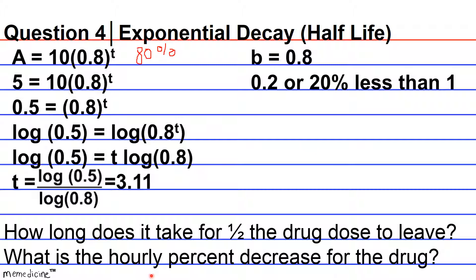because 0.8 is left over, and you'll get to understand with decay functions, the base represents what's left over after the time change. So our hourly decrease is 20%. If this was 0.7, the hourly decrease would be 30%. If it was 0.5, the hourly decrease would be 50%.